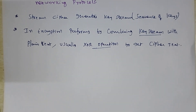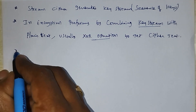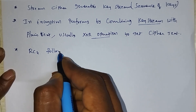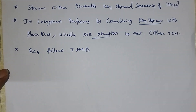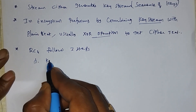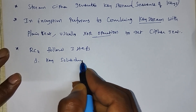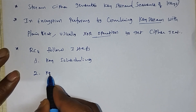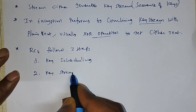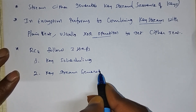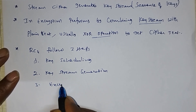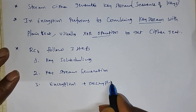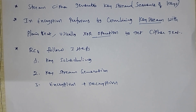RC4 algorithm mainly follows three steps. What are the three steps? The first step is key scheduling. The second one is key stream generation. And the third one is encryption and decryption. We will see one by one what happens in each step.